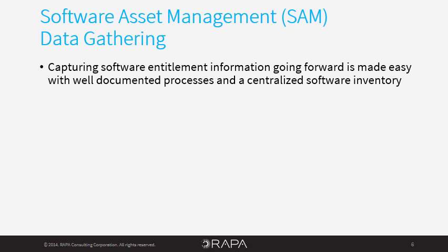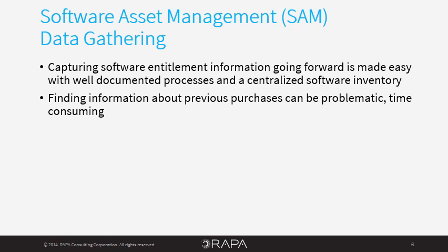Capturing software entitlement information going forward is relatively easy. As you purchase software, the necessary information in the form of a software license, software maintenance support contract, and software agreement is readily available and can be recorded. A set of well-documented and followed processes will help you reliably maintain your centralized software inventory. The problem is finding information about previous software purchases. Because software entitlements are often based on previous software or maintenance support purchases, following the acquisition trail that spans several years is time-consuming and sometimes impossible. Sifting through archived software requests and purchase orders can turn into a difficult, time-consuming, and manual exercise.